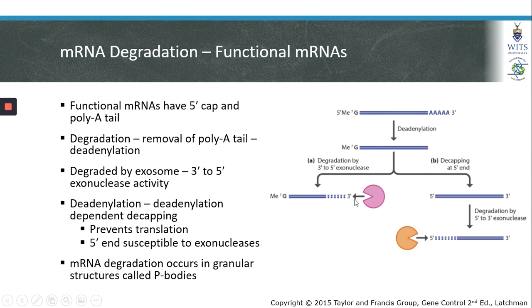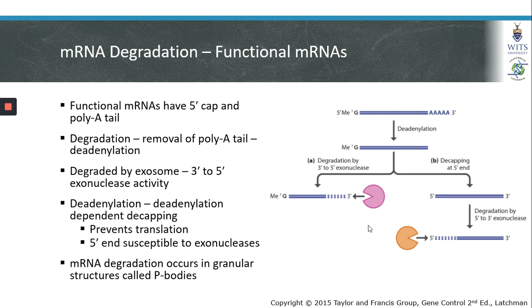After deadenylation, the mRNA can be degraded in a 3' to 5' direction by an exonuclease. The exosome has also been shown to degrade mRNAs in the cytoplasm. Additionally, mRNAs can be degraded more rapidly in a process of deadenylation-dependent decapping, where deadenylation-specific enzymes promote decapping of the mRNA transcript. This prevents translation and makes the decapped mRNA susceptible to exonucleases acting in a 5' to 3' direction.